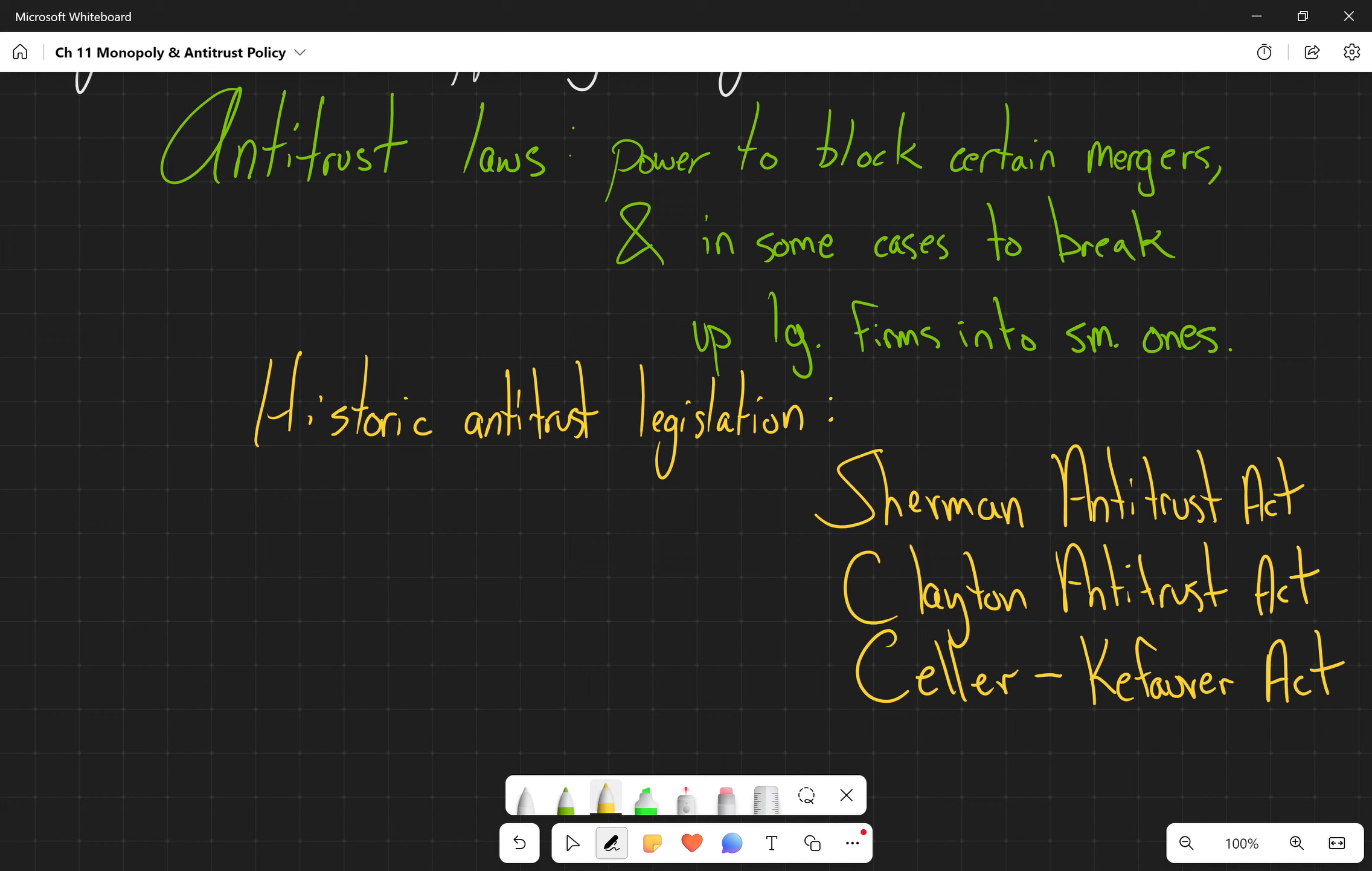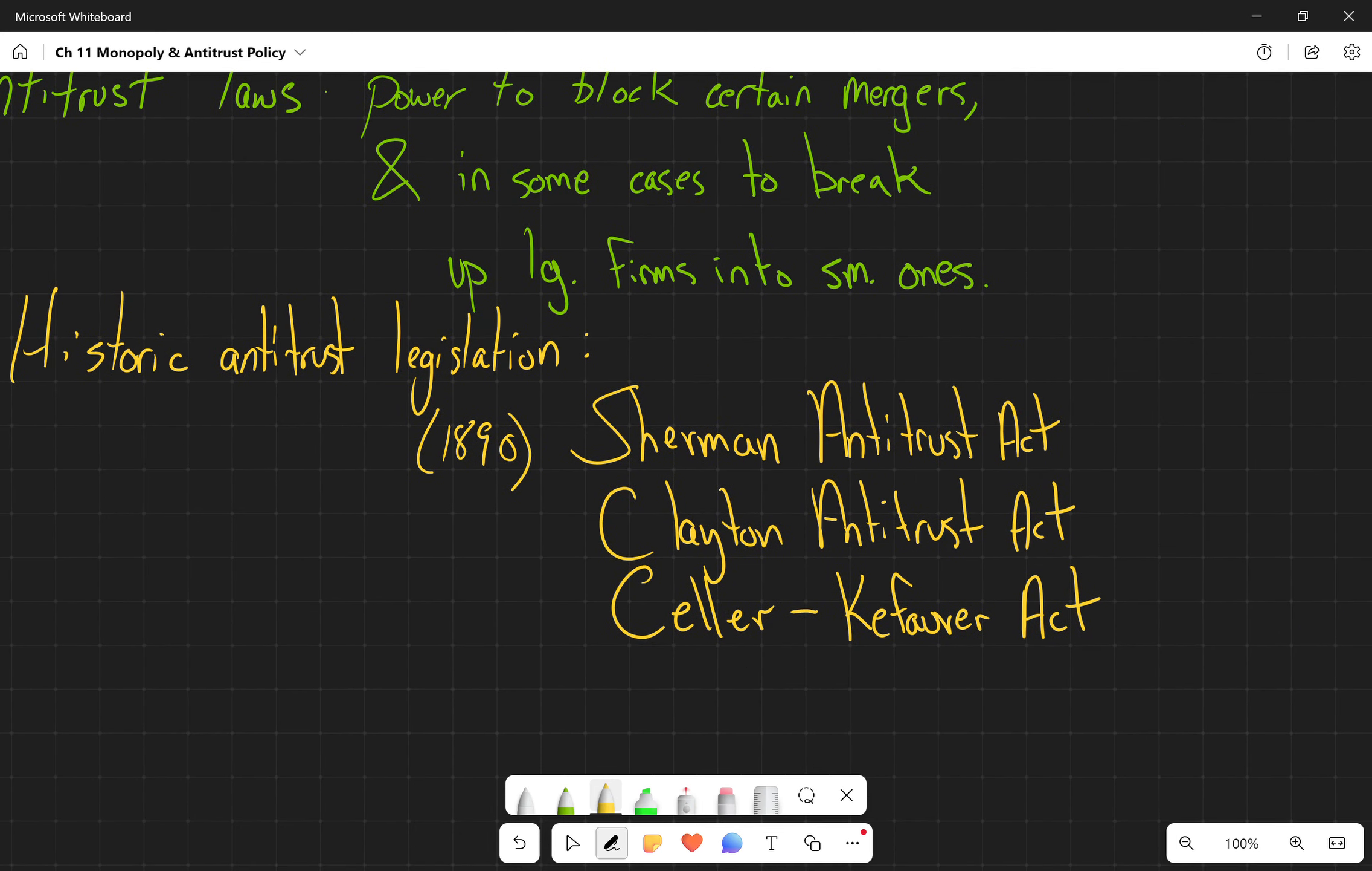We're not going to go into details on these for the purposes of our notes, but just quickly, the Sherman is obviously the first one. This was in 1890 and this was mostly about breaking up Standard Oil. Standard Oil had accumulated 90 percent of all the oil refining, so it broke up Standard Oil into 34 independent firms.